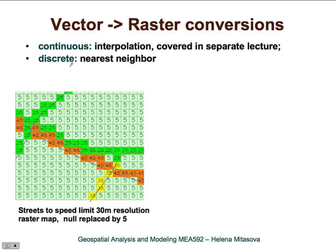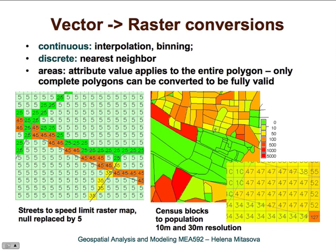For discrete data, vector to raster conversion is relatively simple and the values of a selected attribute are just assigned to the cells through which the vector line is passing, as in this example. For areas, the value associated with a certain polygon is then associated to the grid cells located within that polygon.